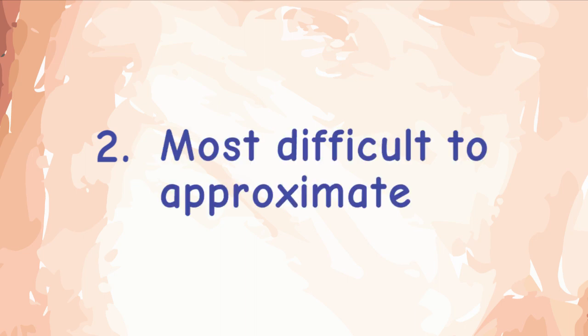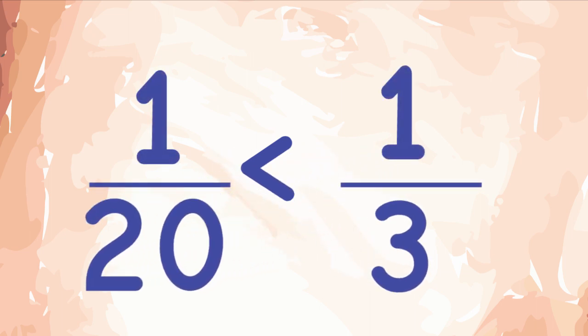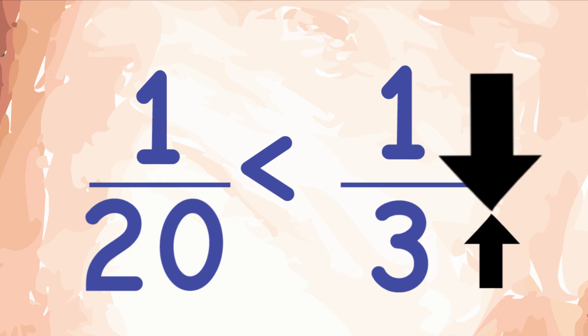For the sake of simplification, consider two numbers 3 and 20. Without the slightest of doubts, 20 is greater than 3. But the reciprocal of 3 is greater than the reciprocal of 20. The larger the number in the denominator, the smaller the magnitude of that entire number.